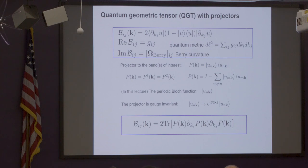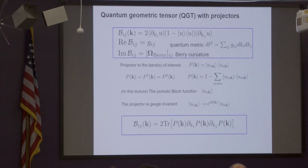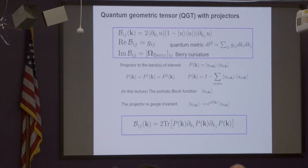You can express the quantum geometric tensor with the projector — that's another nice exercise: go from this definition to this one just using the projector. One really nice trick is to take the normalization condition ⟨u|u⟩ = 1 and then take derivatives to get nice relations. The point is that the quantum geometric tensor is expressed with projectors only.